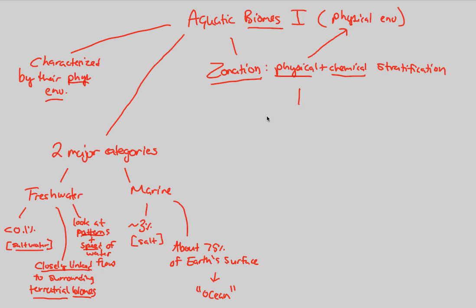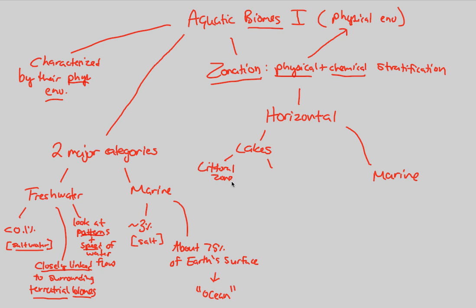The first type of zone we'll look at is horizontal zonation. Horizontal zones of aquatic biomes usually involve both lakes and marine biomes. In lakes, we notice two major zones. The first is the littoral zone, which is defined as a shallow zone of water. Because it's shallow, it's usually well lit and close to the shore.